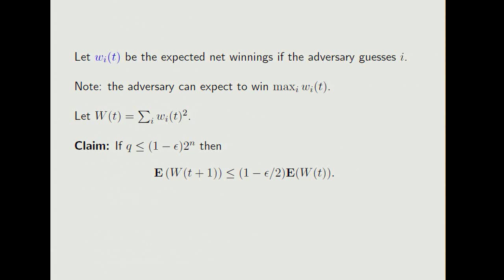So let me write WI for the expected winnings if the adversary guesses I. The key variable is the max over I of WI. It turns out it's easier to work with the variable I'll call W, which is the sum of the squared WI.